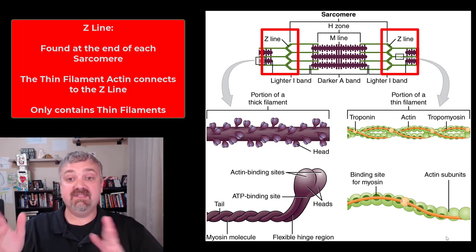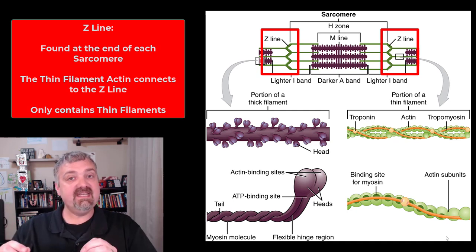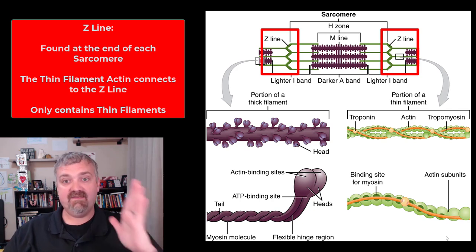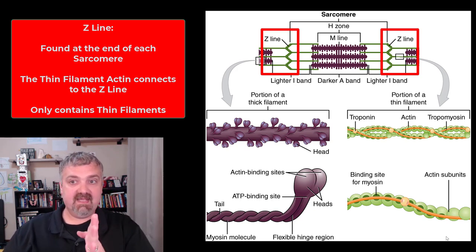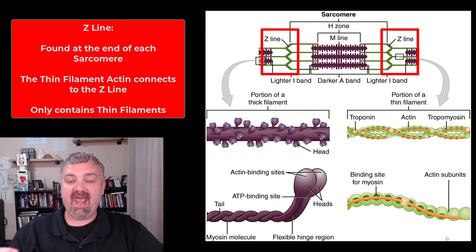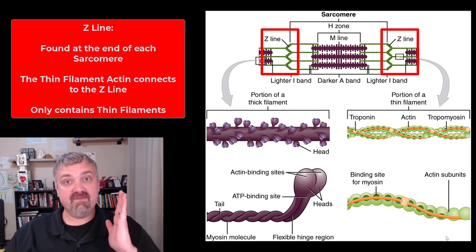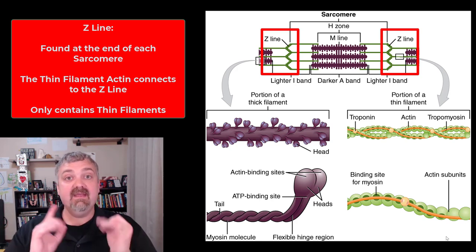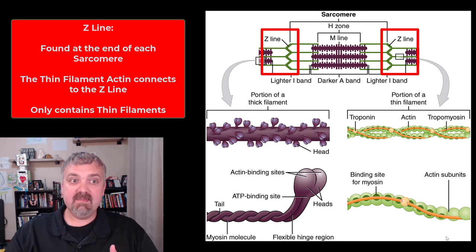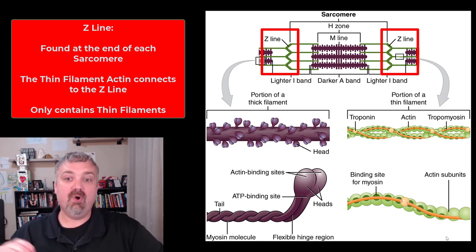Let's start with the Z line. You can see the Z lines in the area where you only see greens — that's going to be your thin filaments, actin. The Z lines are the end of each sarcomere, so they define where one sarcomere begins and where it ends. The Z line only has the thin filaments, which are called actin, and they're actually anchored there to the Z line. So a sarcomere runs from one Z line to the next — Z line to Z line. The Z lines are very, very important.